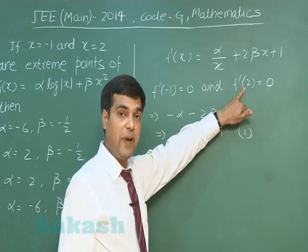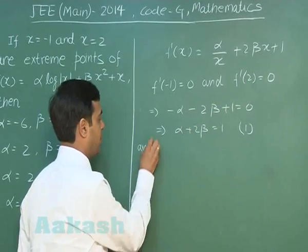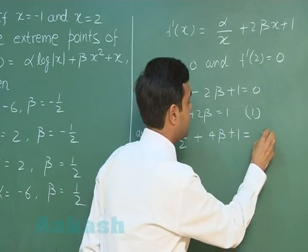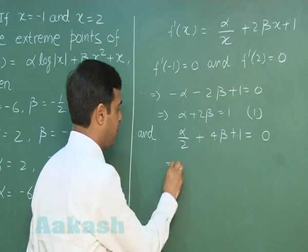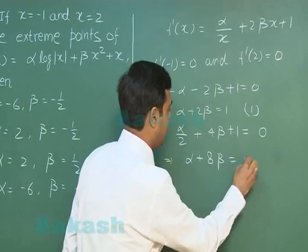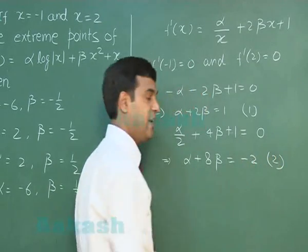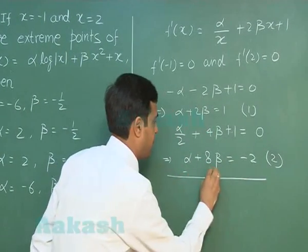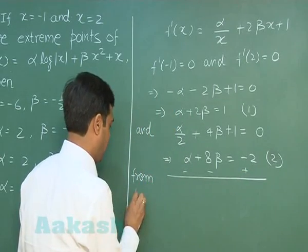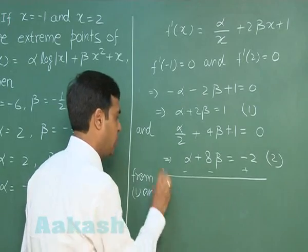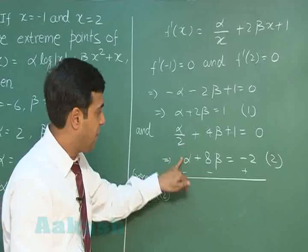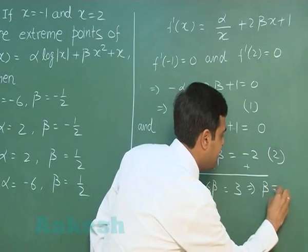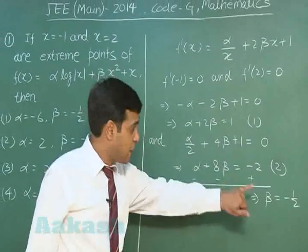Substituting x = 2 into f'(x) = 0, we get alpha/2 + 4 beta + 1 = 0, simplifying to alpha + 8 beta = -2 as Equation 2. Subtracting Equation 1 from Equation 2, alpha cancels out and we get -6 beta = 3, so beta = -1/2.